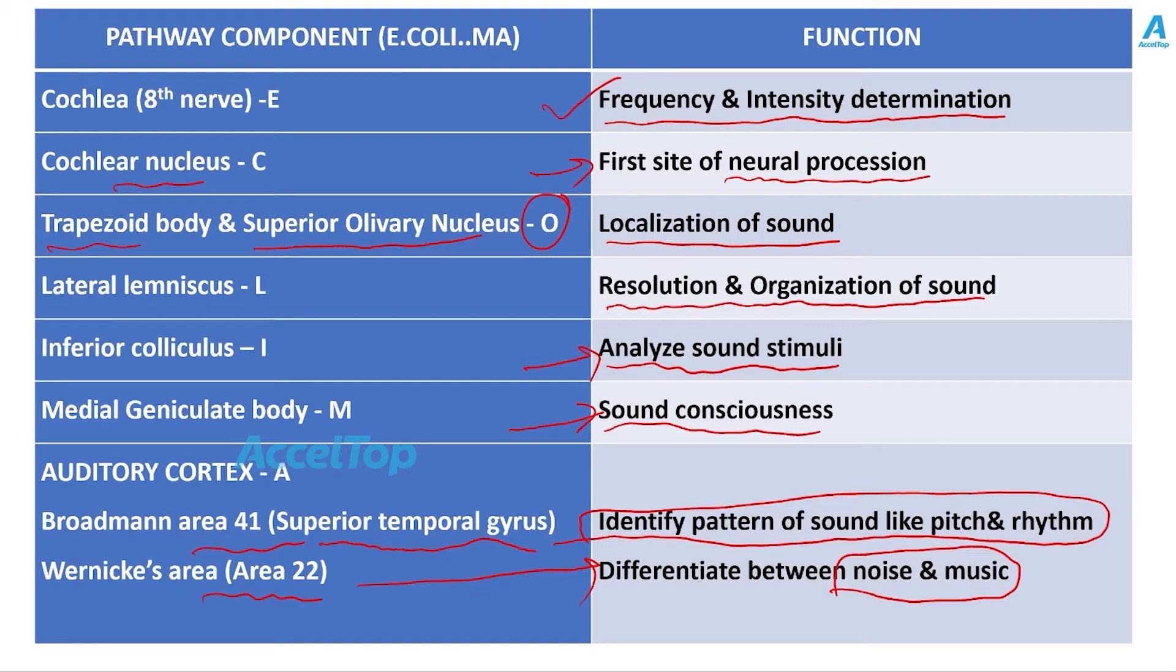So previous exams, there has been multiple MCQs tested from this particular table. You just remember, see take home from this table is Broadman area 41 deals with the identification of sound pattern like pitch and rhythm. You should keep it in mind. Second one, differentiation between noise and music is taken care of by the Wernicke area, that is area 22. So frequency and intensity of sound is determined by 8th knob or cochlear knob. Remember, and other options you just practice again and again and keep it in mind.